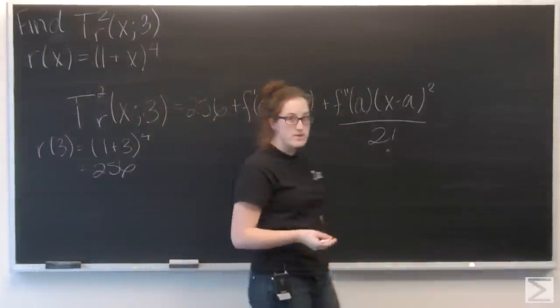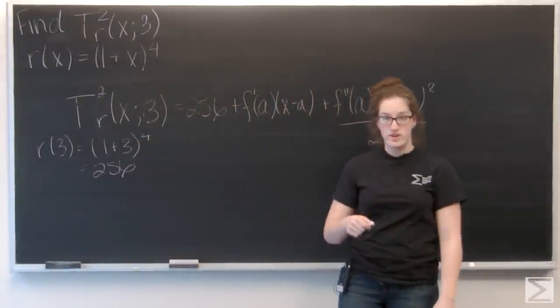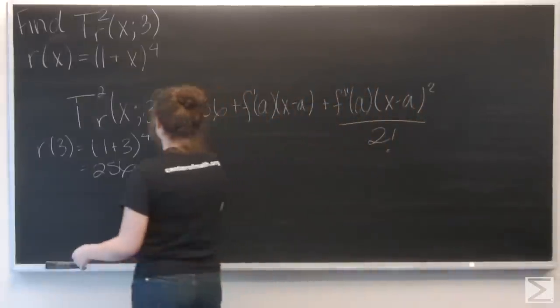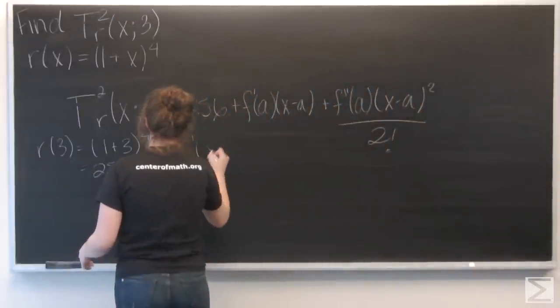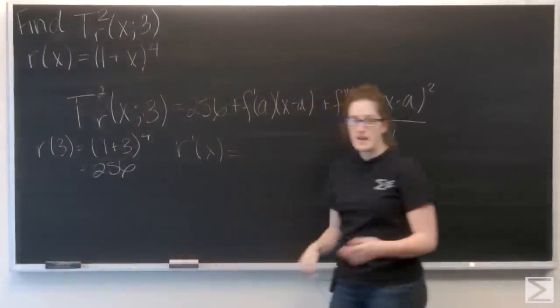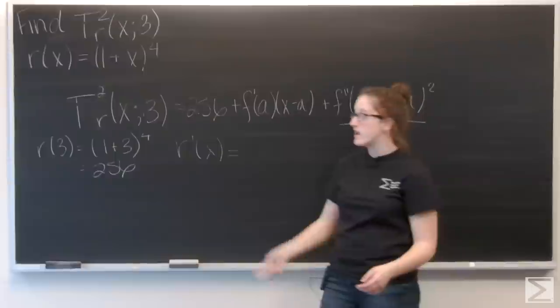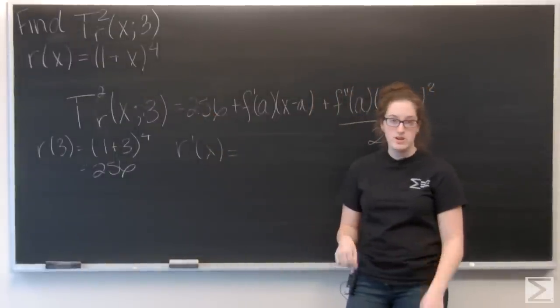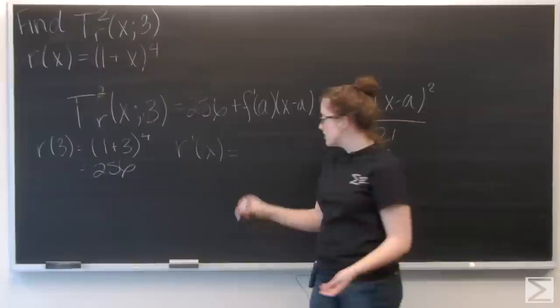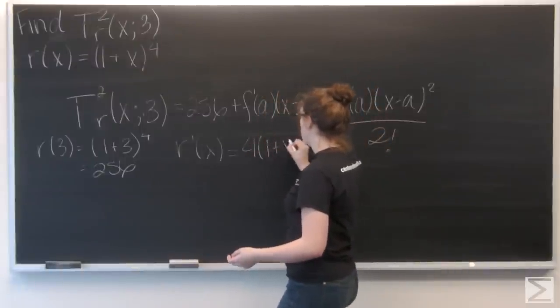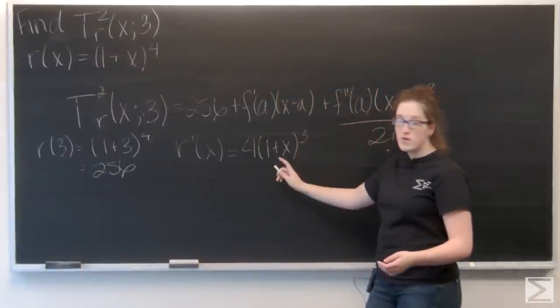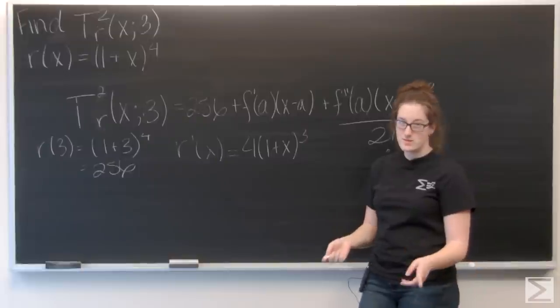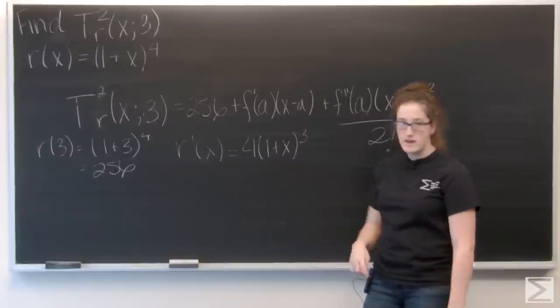Okay, so now I want to find r'(3). So first, let's find the general derivative for r. I have a chain rule here where (1+x) is my inner function and to the fourth is my outer function. So I'm going to have 4(1+x)³ times the derivative of (1+x), which is just 1. So that's r'.